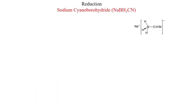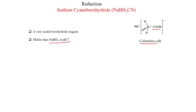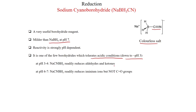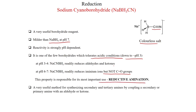Sodium cyanoborohydride is another reducing agent; its structure has a cyanide group attached to boron. It is a colorless salt, milder than sodium borohydride, with reactivity strongly pH-dependent. It is one of the few borohydrides that tolerates acidic conditions down to pH 3. At pH 3–4, it readily reduces aldehydes and ketones. At pH 6–7, it readily reduces iminium ions but not carbonyl groups — this property is responsible for its most important use: reductive amination.